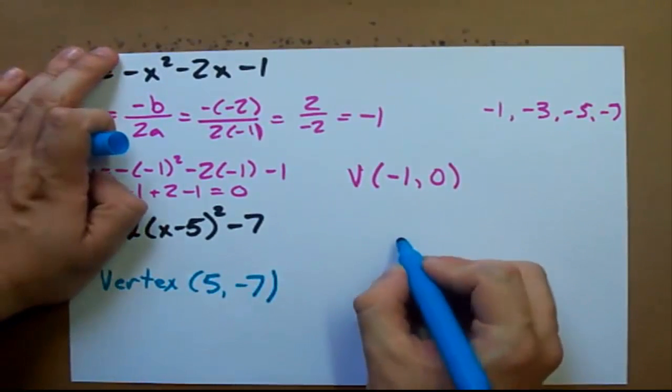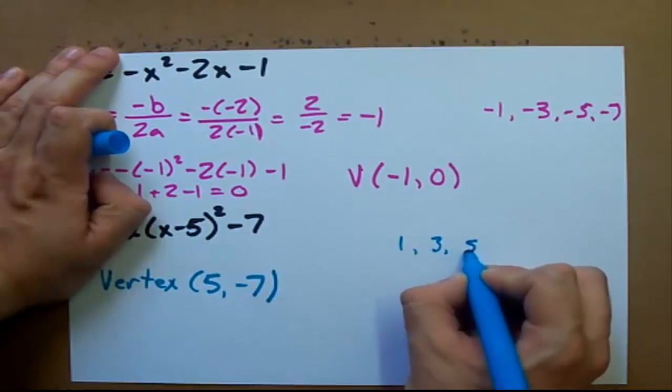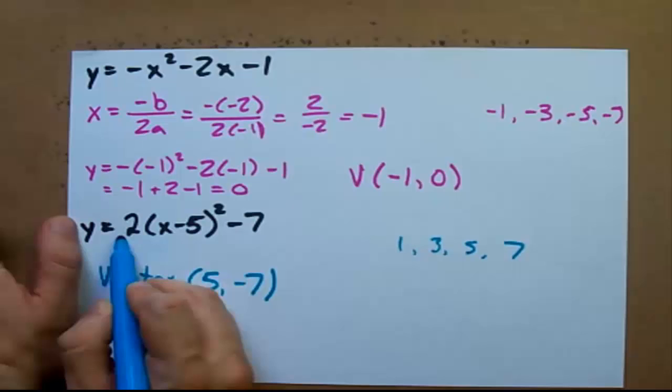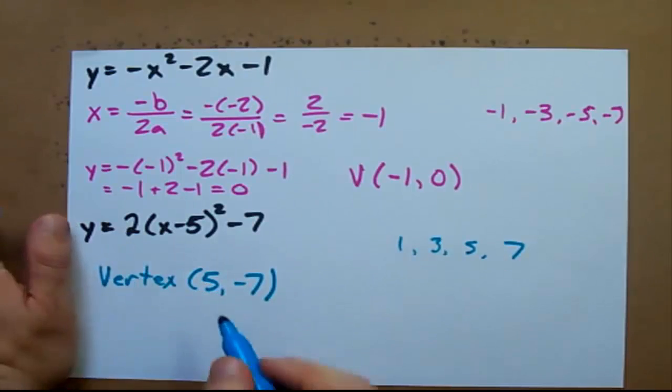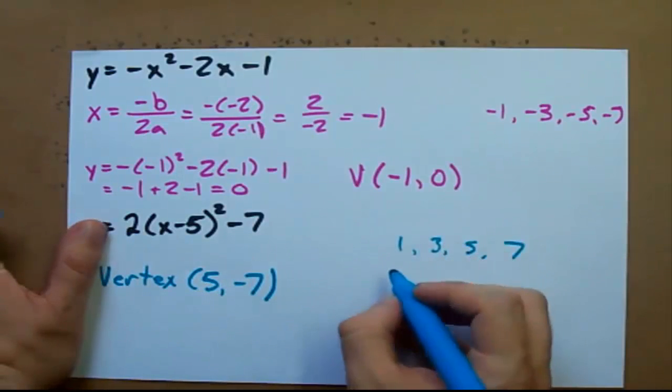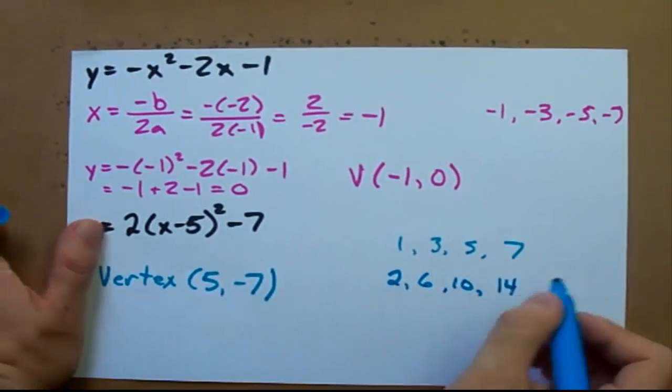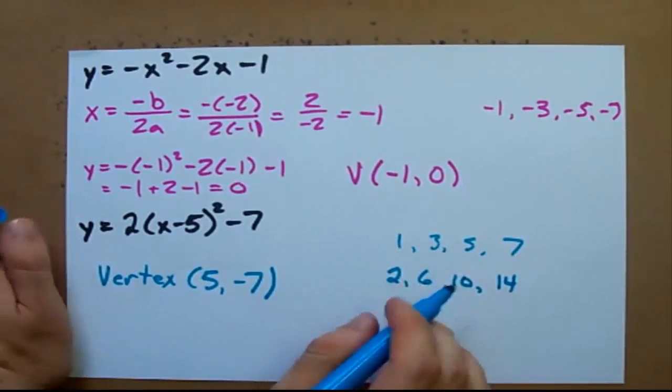And we normally have our step pattern of 1, 3, 5, 7, but we have to multiply it by whatever is in front of your x squared, which is 2. So your step pattern becomes 2, 6, 10, 14. See, we multiplied each of those by 2.